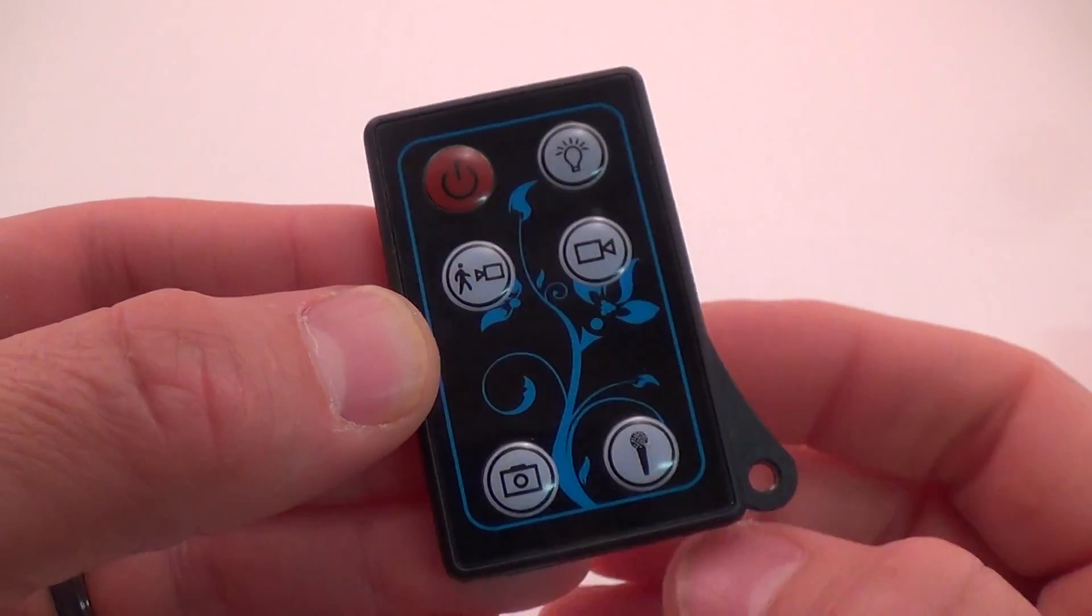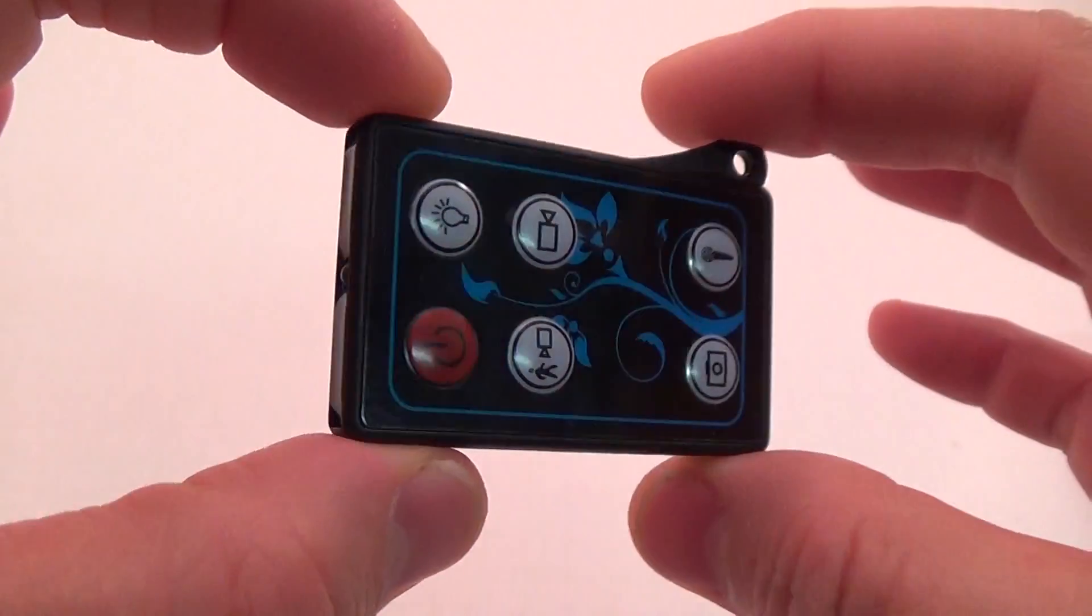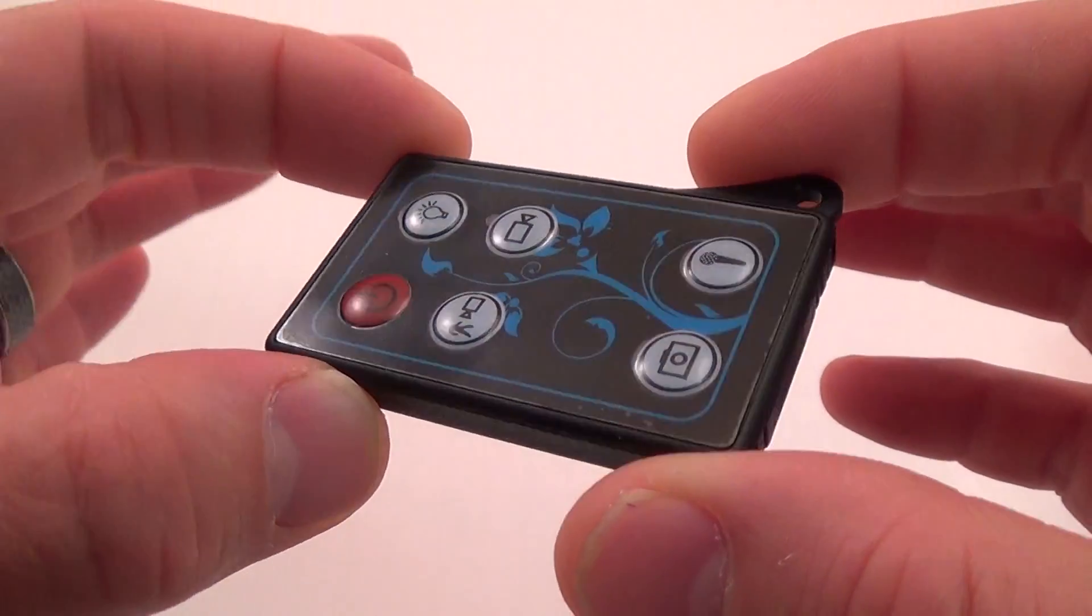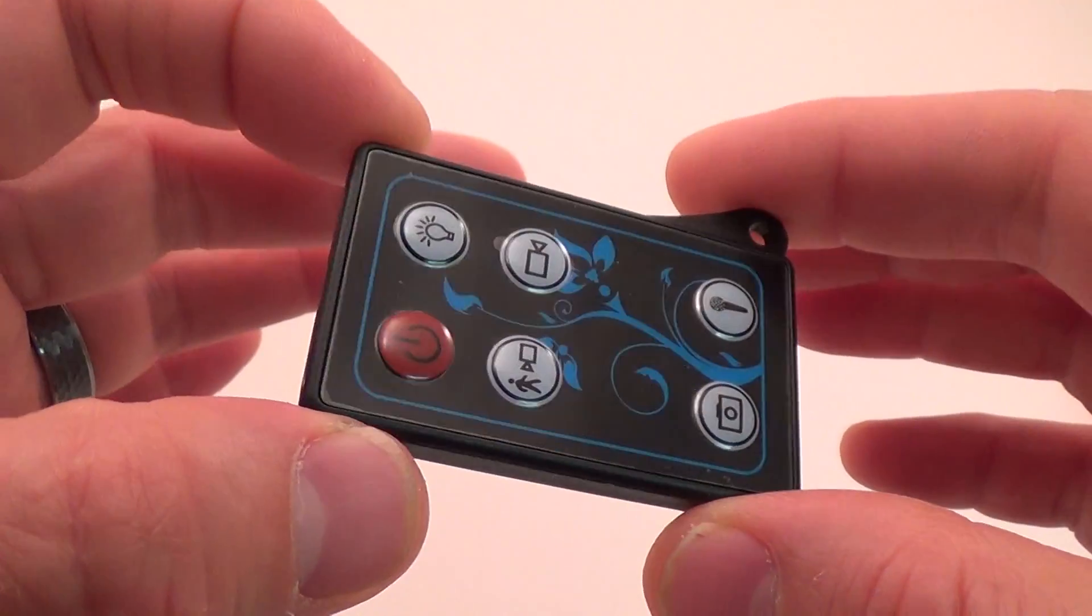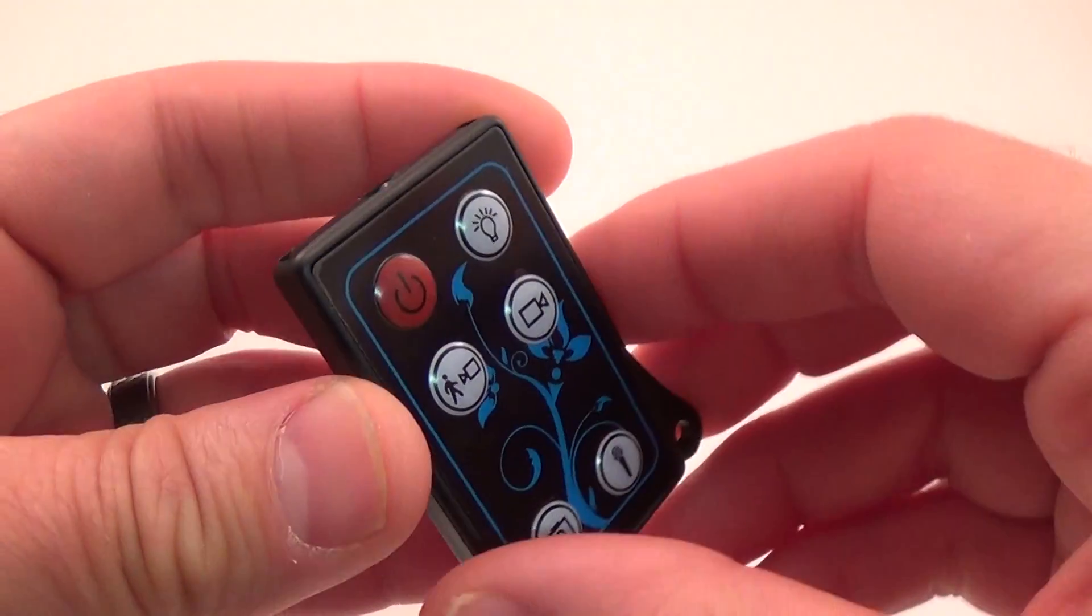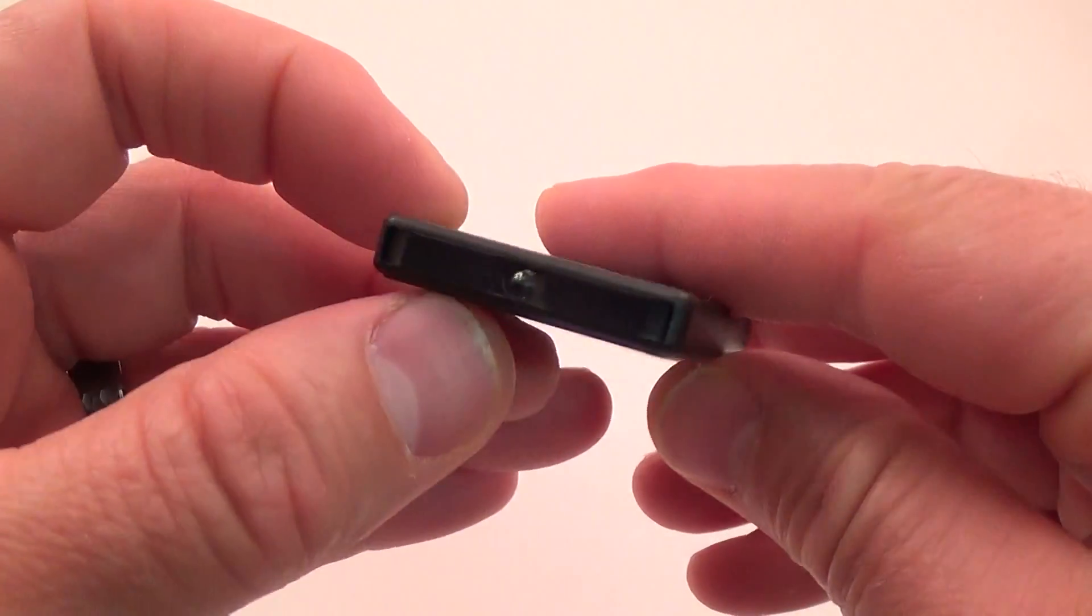All right, this is a quick video just to show you guys how to test one of these remotes to see if it's working or at least putting out a signal. This is an infrared remote that's normally used for spy clock cameras and other such devices.